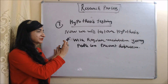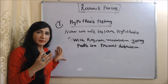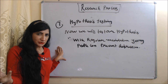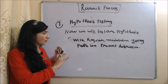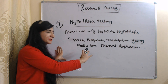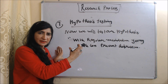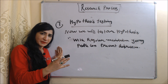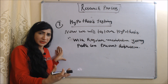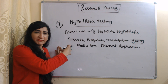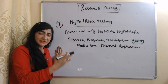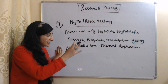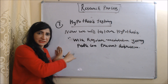The next step is hypothesis testing. Now we will test our hypothesis. There are many methods of testing a hypothesis. Our hypothesis was that with regular meditation, young people can prevent depression. Based on our research — the information collected from people who have cured their depression or from doctors — we will test our hypothesis. If the maximum number of people say that meditation is very helpful and helped them cure their depression, then we will accept this hypothesis; otherwise not.